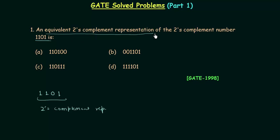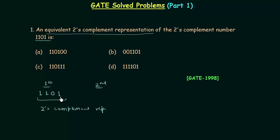The problem statement is a little bit confusing, so I will explain it. We have a number in 2's complement representation and we have to find another way to represent it in 2's complement. So we can say this is the first way to represent the number, and we have to find the second way to represent this number in 2's complement.